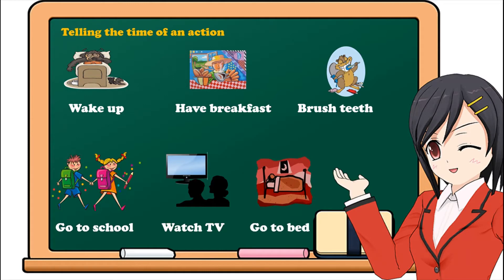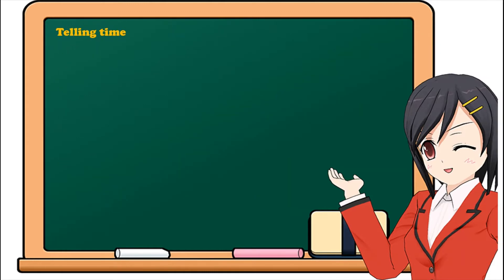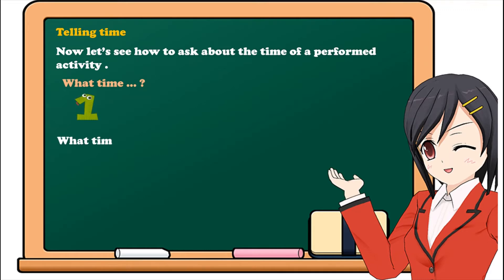Okay, so now let's see how to ask about the time of a performed activity. In fact, we have two main ways. The first one: what time? And it comes in the following way: What time, then do or does, then subject, then verb.